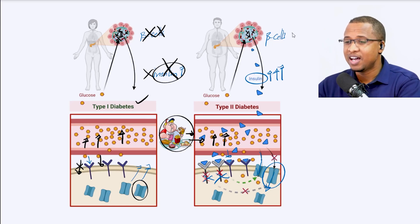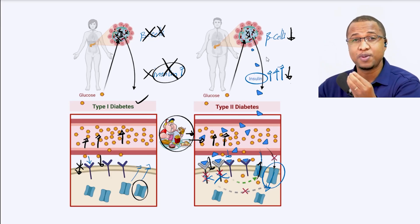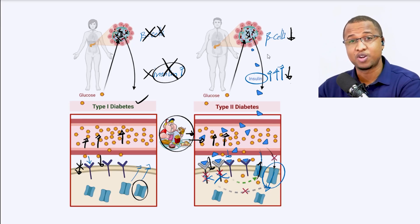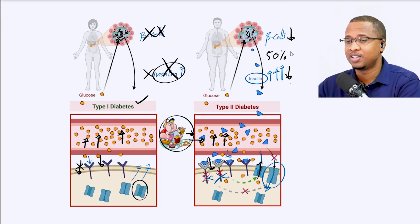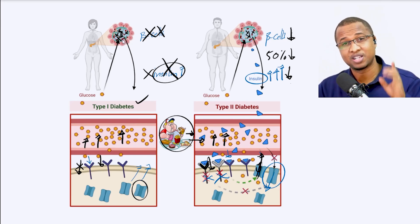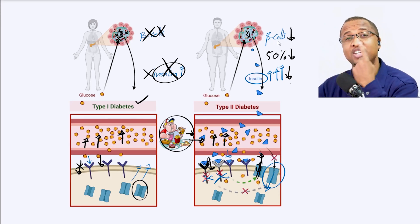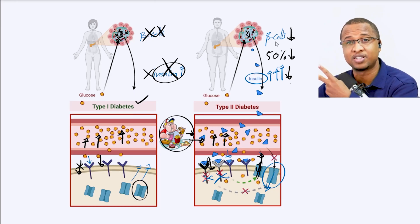You will not have enough beta cells to make insulin to come and tell these cells to come and get glucose. That's why for most people with type 2 diabetes, at the time of diagnosis, about half of the beta cell function is gone. So type 1 diabetes: you have one problem — your beta cells are gone because of your immune system. For type 2 diabetes, you have two problems: insulin resistance and beta cell dysfunction.